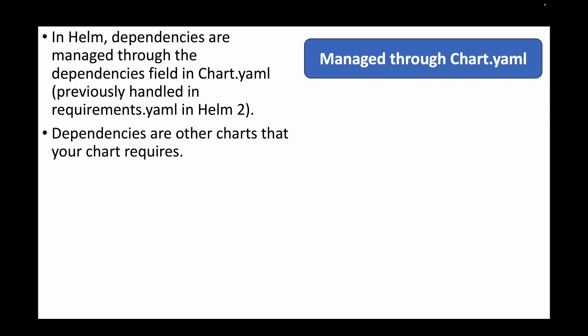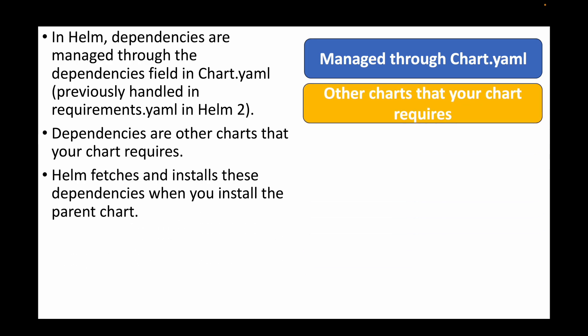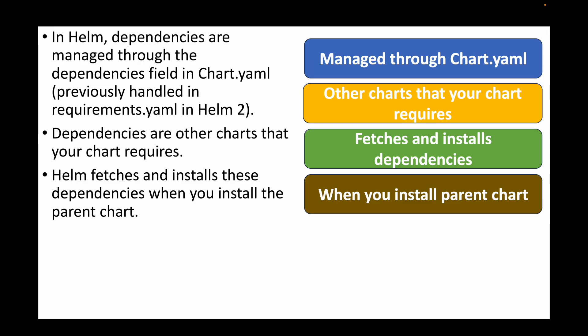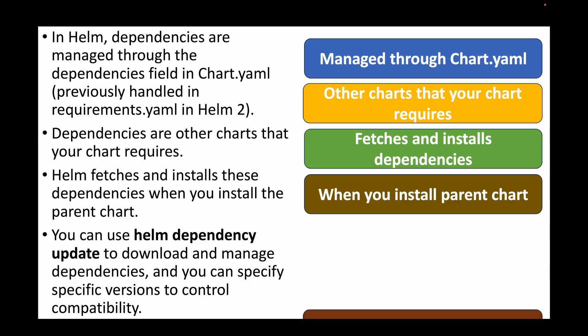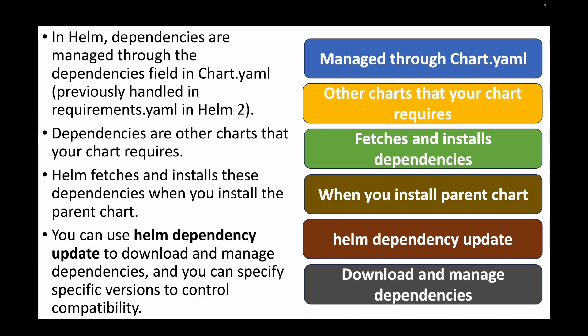The next question is: how does Helm handle dependencies between charts? In Helm, dependencies are managed through the dependencies field in the chart.yaml file. This was previously handled in the requirements.yaml but with newer versions it is handled in chart.yaml itself. Dependencies are other charts that your current chart needs. Helm will fetch and install these dependencies when you install the parent chart. You can use the helm dependency update command to download and manage those dependencies, and you can also specify specific versions to control compatibility.